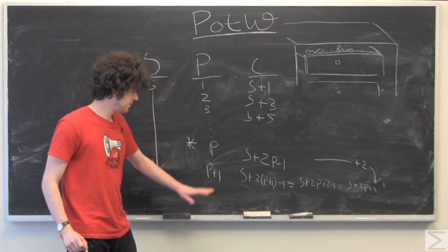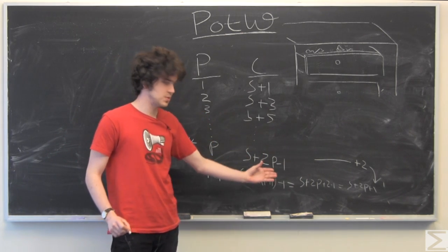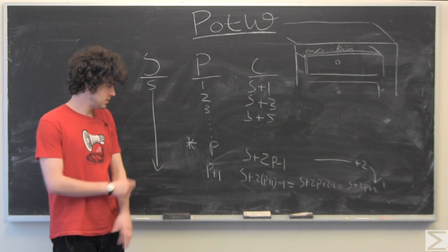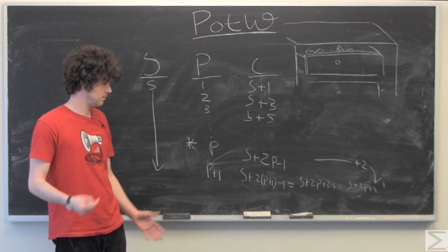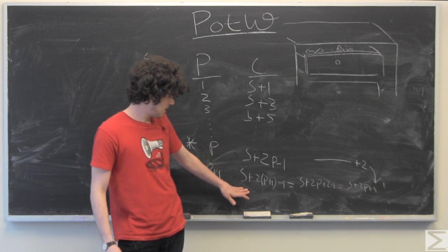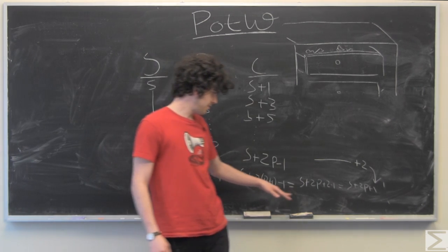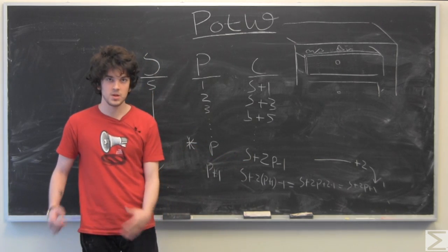So from here to here, I've directly substituted p plus 1 into this p, as you do in inductive proofs often. So substituting and simplifying, we get s plus 2p plus 1, which is exactly two more than this p, which is what we would expect.